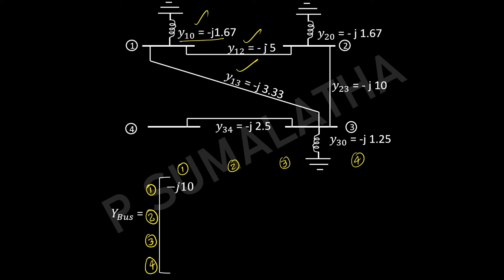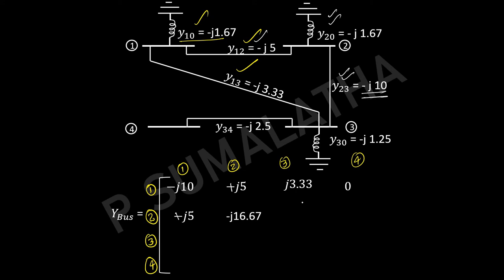Y12 equals plus J5. Y13 equals plus J3.33. Y14 equals 0 since there is no connection between buses 1 and 4. Y21 equals Y12 equals plus J5. Y22 is the sum of admittances connected to the second bus: minus J5 plus minus J1.67 plus minus J10 equals minus J16.67. Y23 equals minus of minus J10, giving plus J10. Y24 equals 0 — no direct connection between buses 2 and 4.